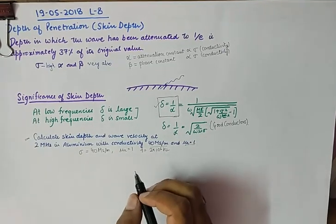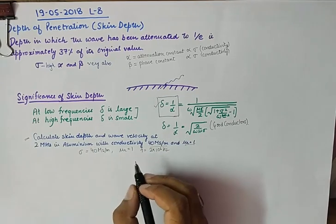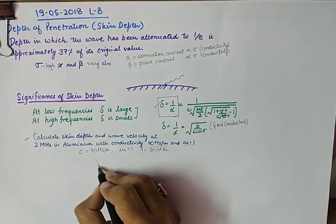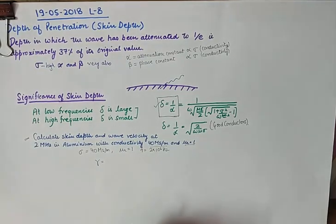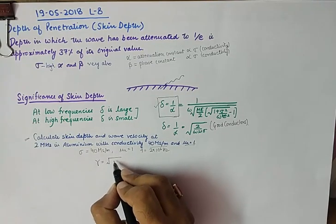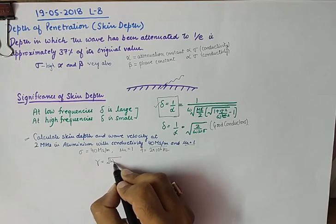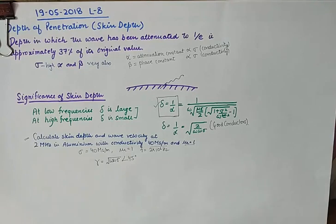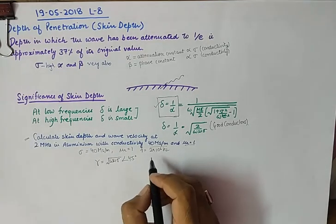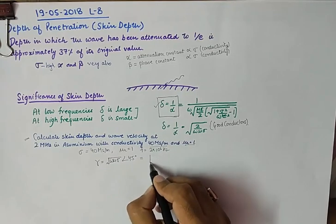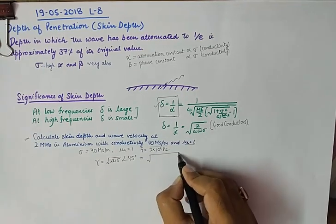Now, if we consider aluminum to be a good conductor, we can directly apply the formula for propagation constant for good conductors. The propagation constant for good conductors is given by omega, mu, sigma. And this is also taken from a previous discussion. And we simply need to substitute the values here, because everything is known here.